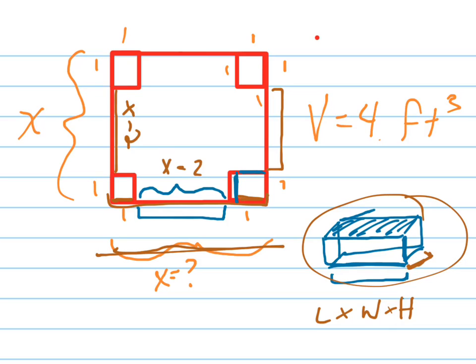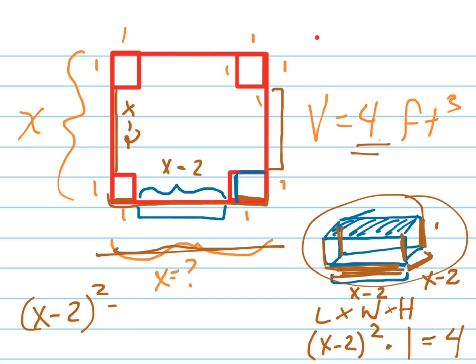So what's this distance right here? So that'll be x. That's going to be x minus 2. And what's this distance here? X. X minus 2, and what's this distance here? The vertical distance? That was 1. That was 1. So what's the length times width times height? It's x minus 2 squared times 1, which doesn't really do anything. And what do we say that has to equal? 4 feet. 4 feet. So solve that equation. x minus 2 squared equals 4.